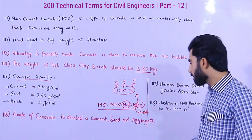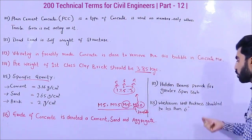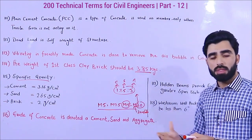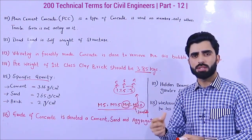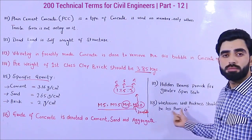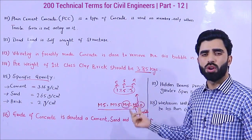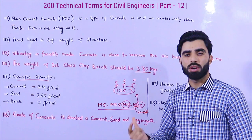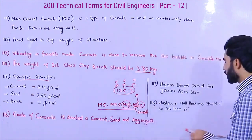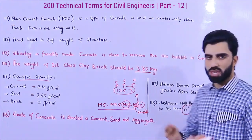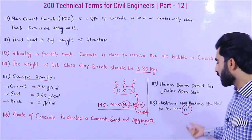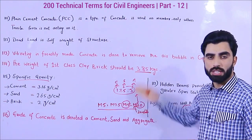Term number 118: washroom wall or bathroom wall thickness should not be less than six inches. This is because inside the washroom we provide sanitary and plumbing work for water pipes. If the wall thickness is less than six inches, we are not able to provide the plumbing work, and it can cause cracks and other problems. Personally, I use nine inches for washroom walls, because when cutting the wall for plumbing pipes, a minimum of about 2.5 inches of wall is cut for sanitary work.